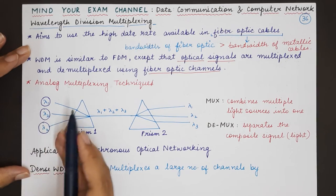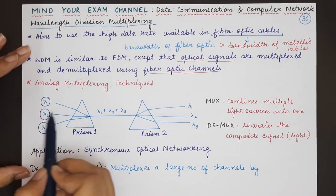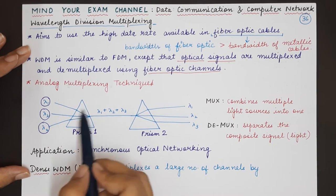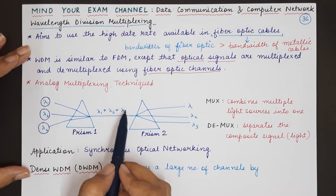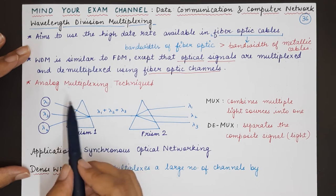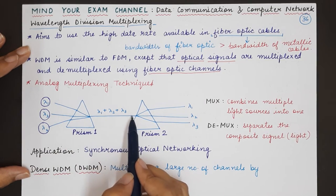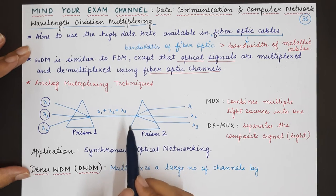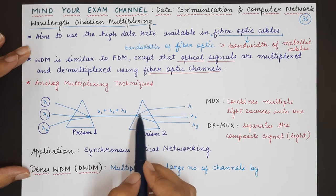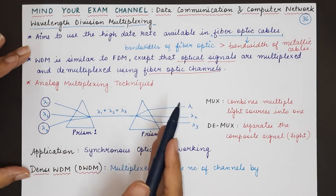Different optical signals coming from different sending devices having different wavelengths are sent through the prism so that we can get a composite optical signal and the optical signal has a wavelength that comprises of that consists of all these three wavelengths. And then when the composite signal reaches the receiver it is again sent through a demultiplexing prism.